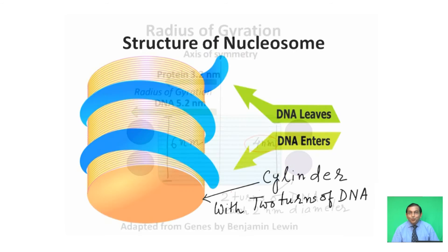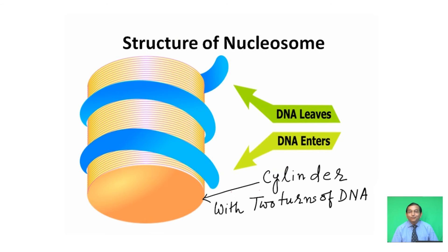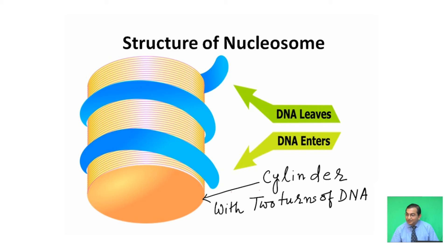The nucleosome appears cylindrical with two turns of DNA around it. At one end DNA leaves and at the other end DNA enters the nucleosome, and these two points of entry and exit are very close together.